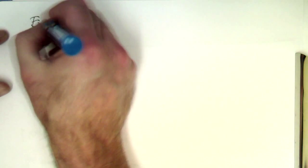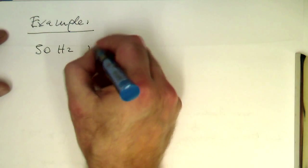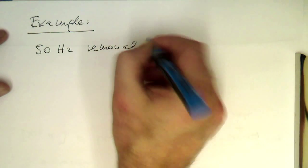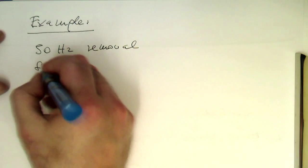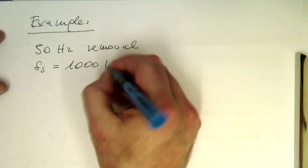So let's do as an example, again 50 Hz removal. So our sampling rate FS is as usual 1000 Hz.